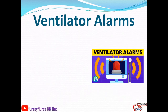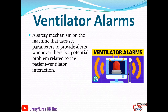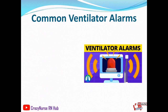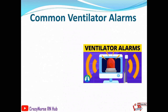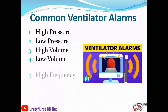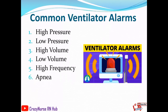Ventilator alarms are a safety mechanism that uses set parameters to provide alerts whenever there is a potential problem related to patient-ventilator interaction. The alarms can be visual, audible, or both. Common ventilator alarms include: high pressure, low pressure, high volume, low volume, high frequency, apnea alarm, high PEEP, and low PEEP.